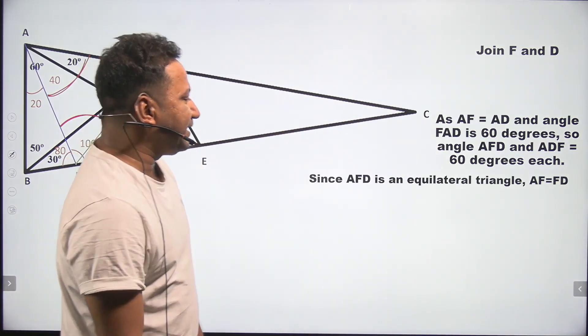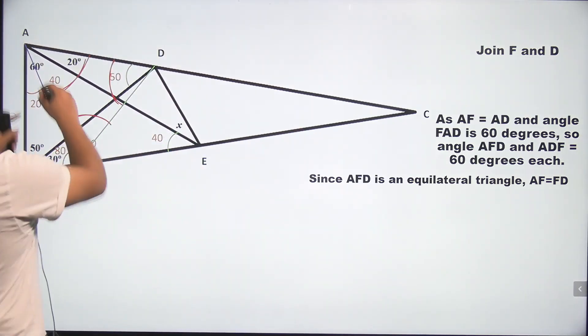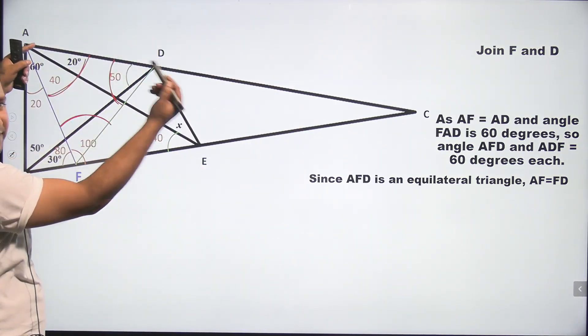Now, since AFD is an equilateral triangle, AF will be equal to FD. AF and FD will be equal. That's common sense.